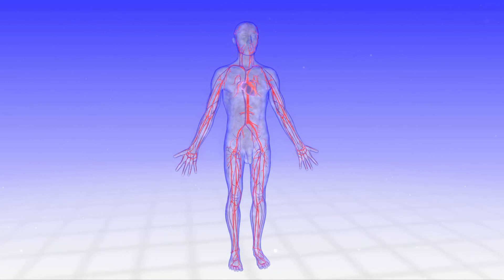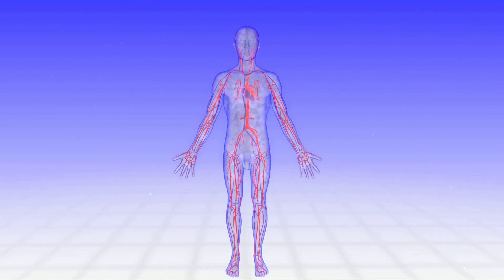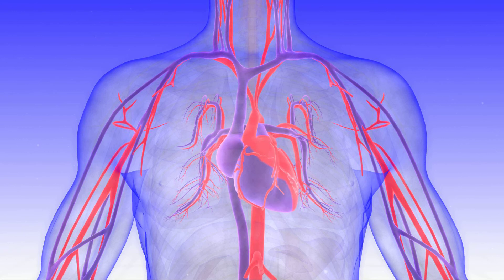The circulatory system is a very complicated maze of vessels, from the heart to the rest of the body, carrying blood with its oxygen and nutrients.